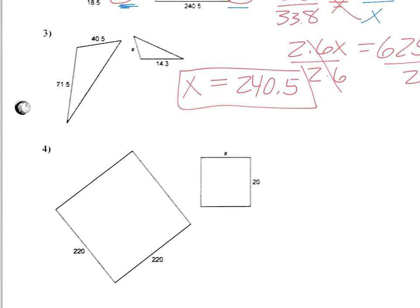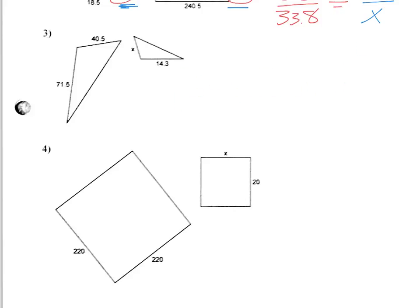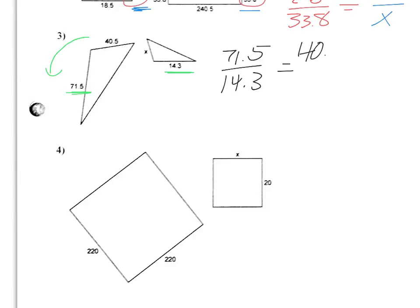Number three is a little different. What's different about it is the fact that we have our shapes but they're kind of twisted or turned. I've got to kind of look and reorient the picture so that they match up. Really what you're doing is taking this one and rotating it, then you're going to see the 71.5 goes with the 14.3. So I'm going to do 71.5 over 14.3 equals - now 71.5 was in the big triangle - so 40.5 over X. Let's cross multiply: 71.5X equals 14.3 times 40.5, which is 579.15, divided by 71.5, and you get 8.1.